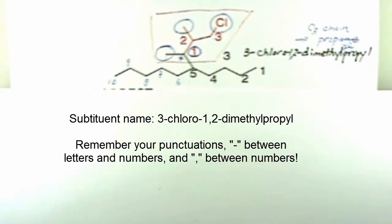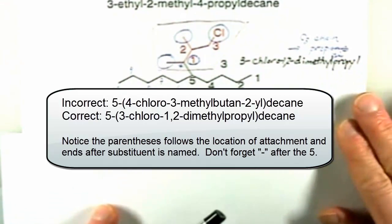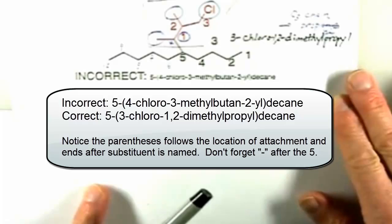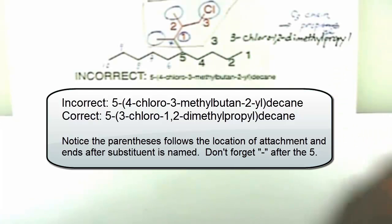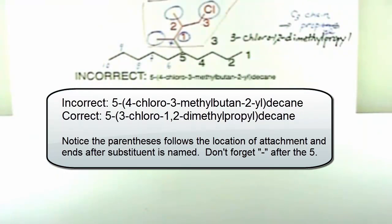So what we have is three chloro, one, two dimethylpropyl group. That entire group is attached at position five on the decane chain. And I'll post this online as well, the sheet. So the correct naming for this molecule is five hyphen, all in parentheses, three chloro, one, two, dimethylpropyl, and then we'll close the parentheses and then decane.